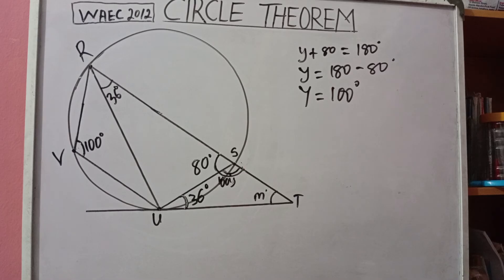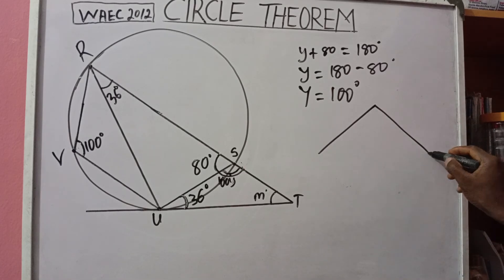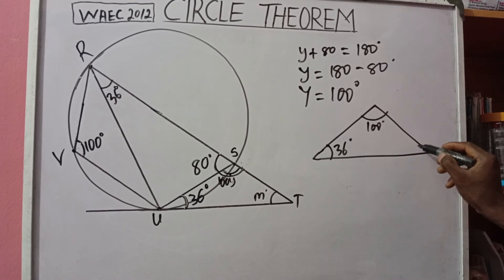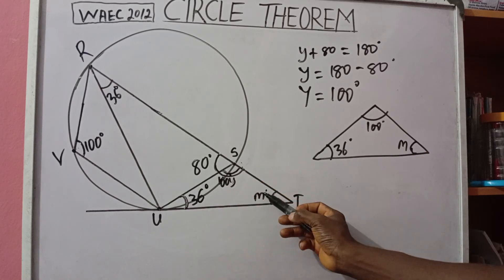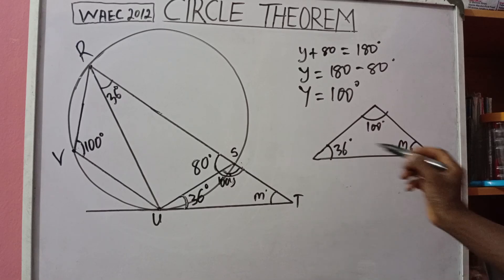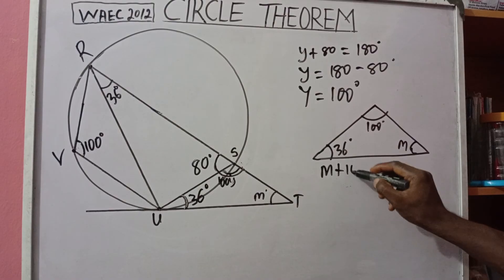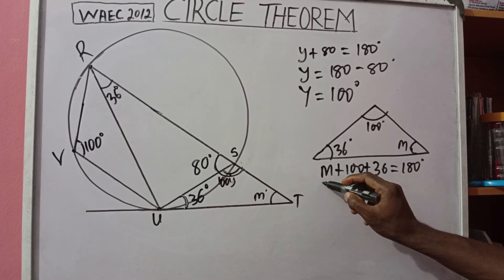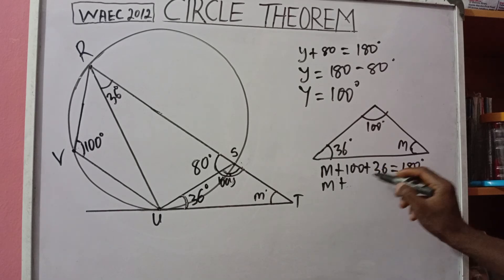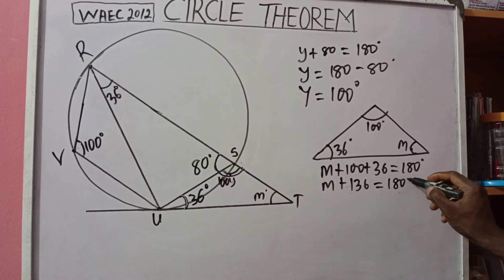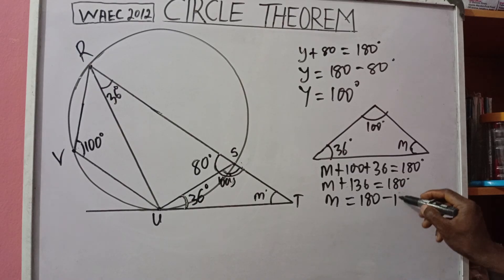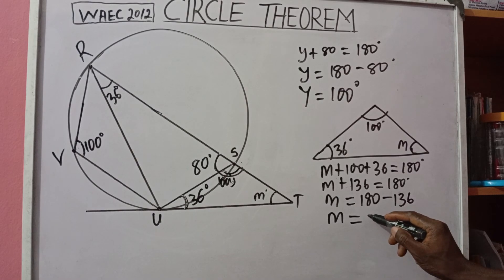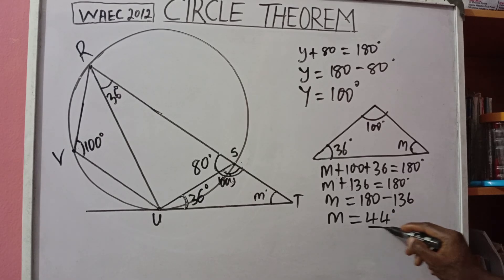Now we have a triangle with angles 36 degrees, 100 degrees, and M. Using the sum of interior angles of a triangle, which equals 180 degrees: M plus 100 plus 36 equals 180. That gives M plus 136 equals 180. Therefore M equals 180 minus 136, which gives M equals 44 degrees. That is our answer.